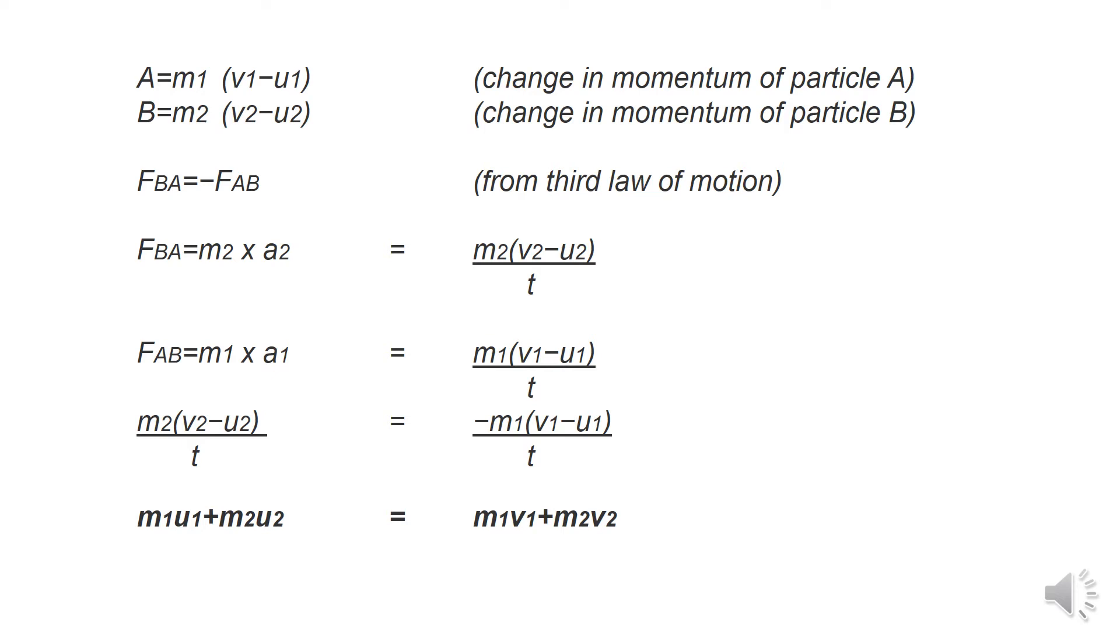So, you can see over here running the equation, finally we get M1U1 plus M2U2 equals M1V1 plus M2V2. T and T will cancel out.